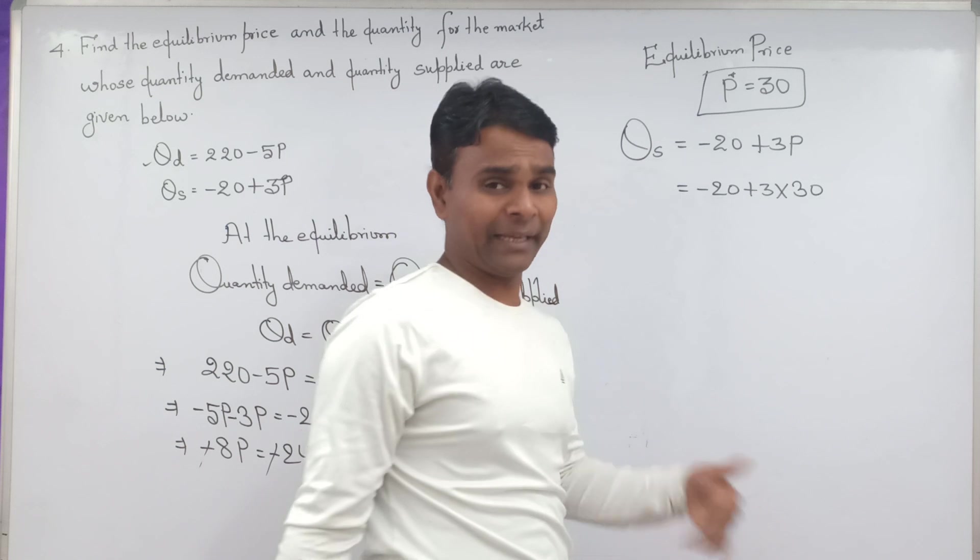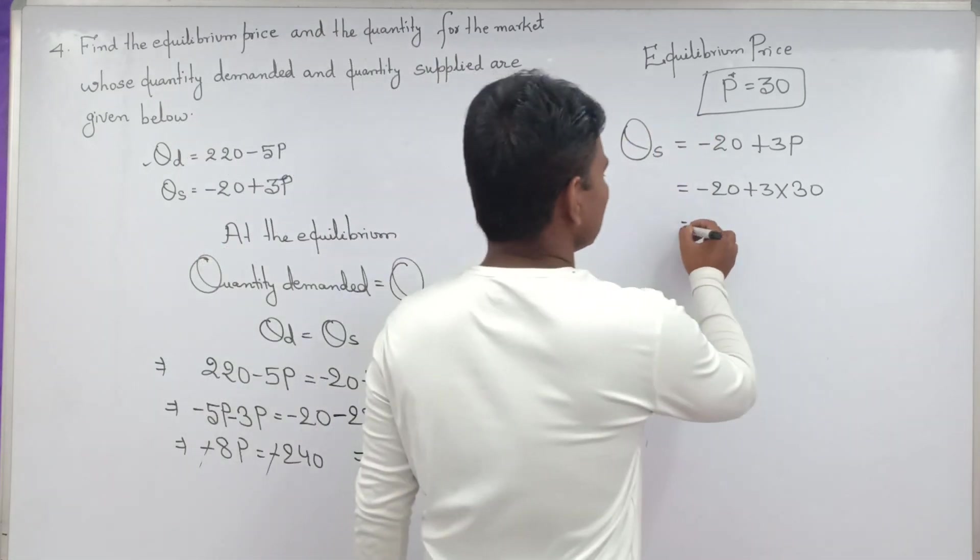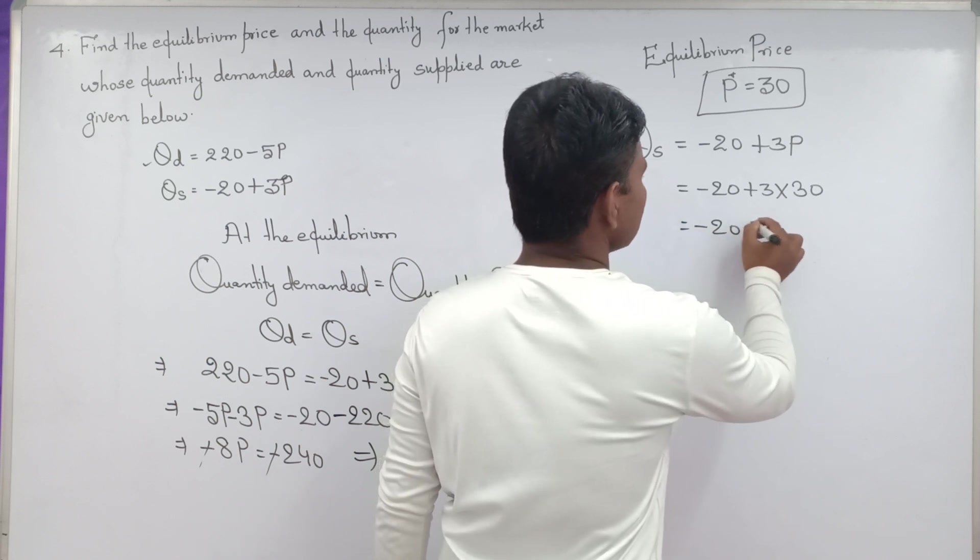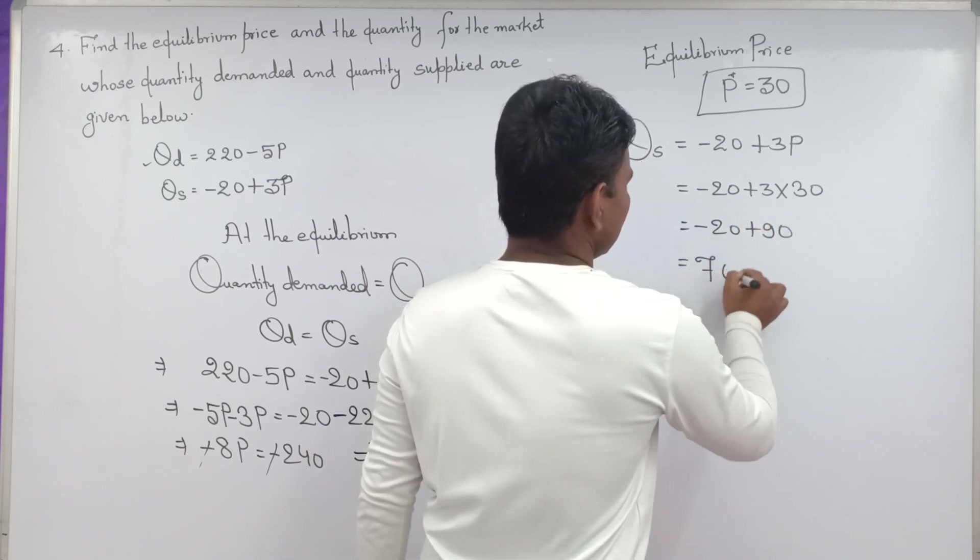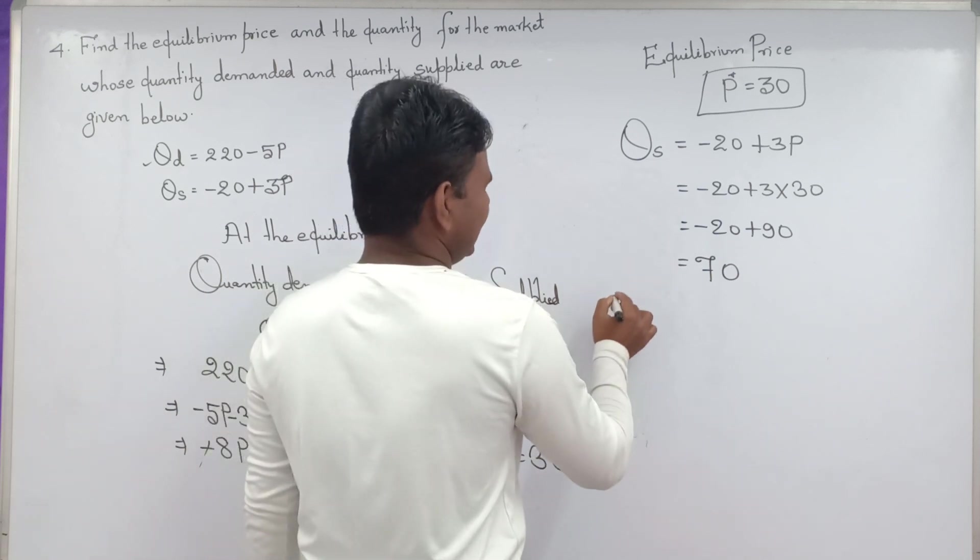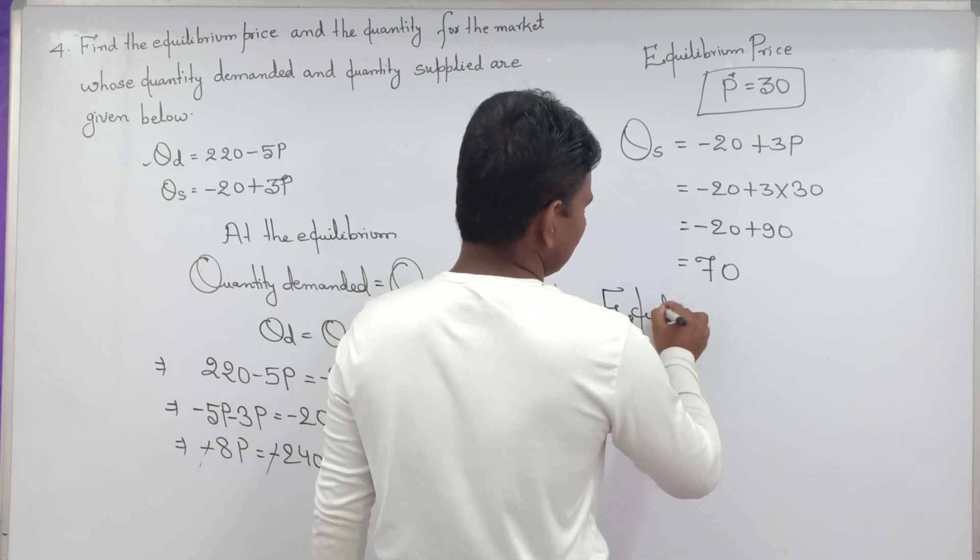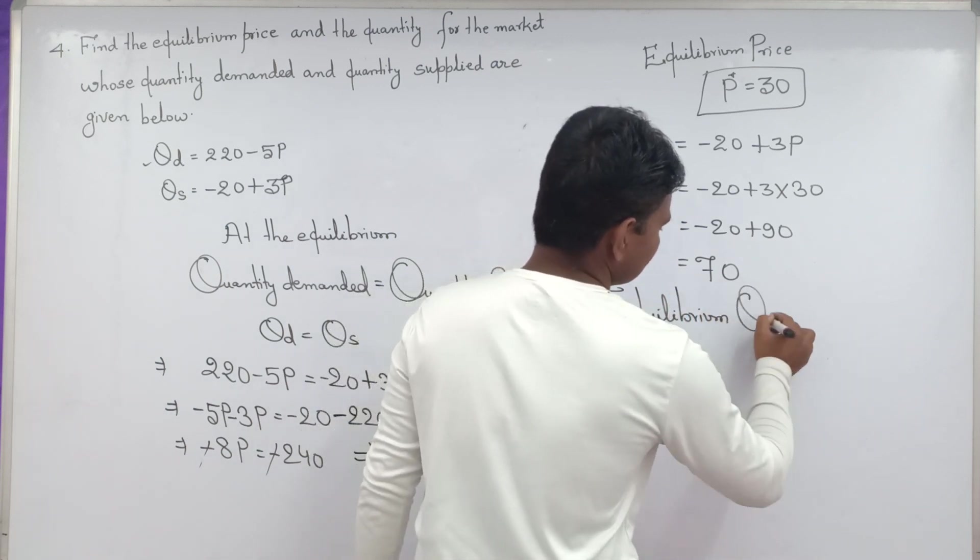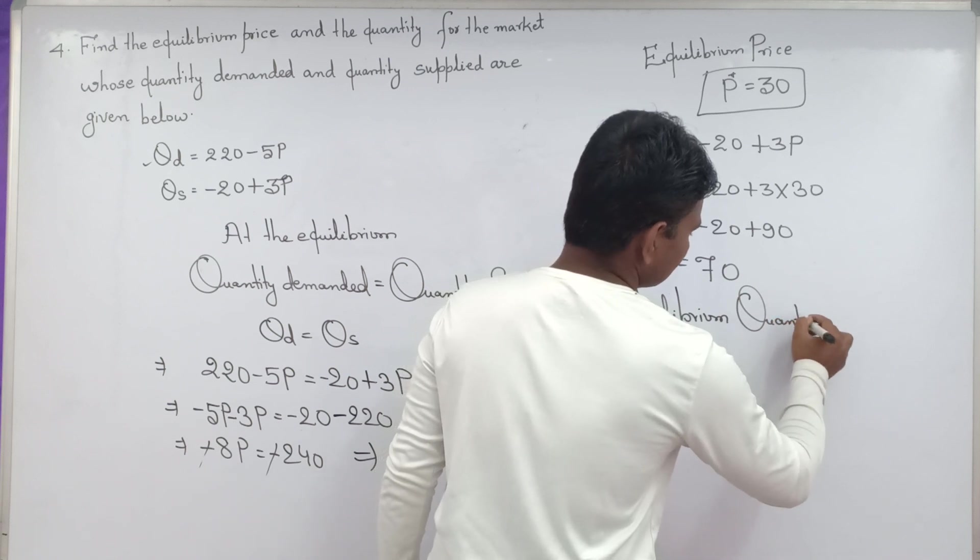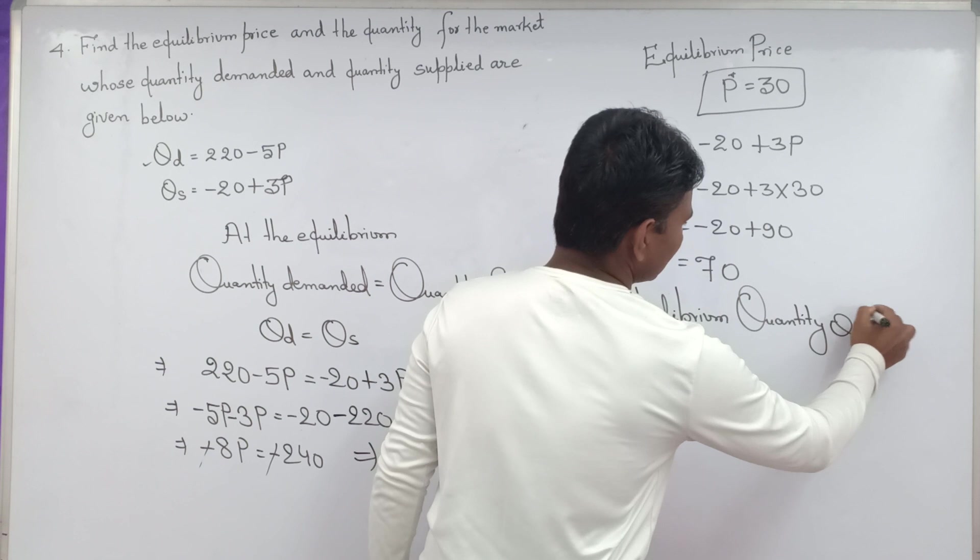Solve this: minus 20 plus 90, plus 70. So equilibrium quantity equal to Q equal to 70.